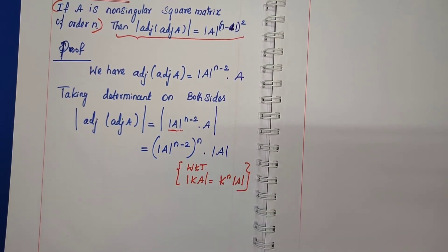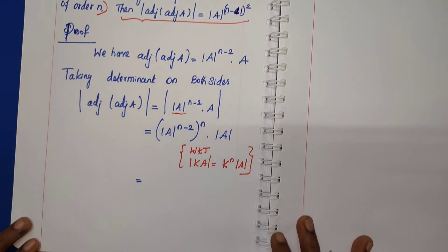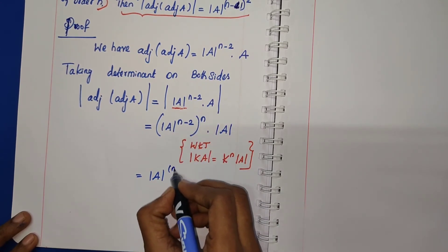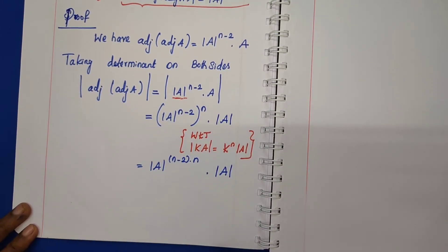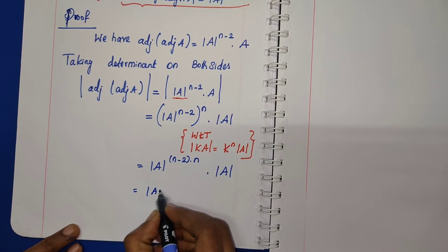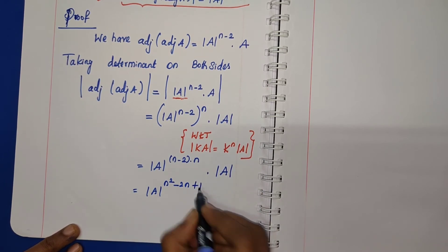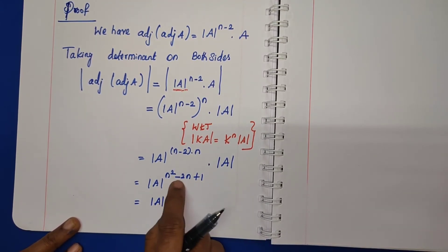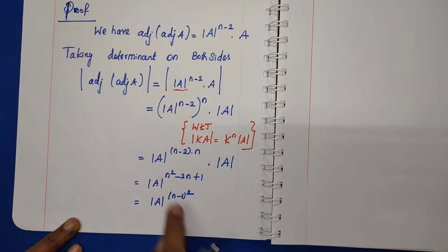So we can multiply the powers: determinant A to the power (n-2) into n, plus determinant A to the power 1. Combining, the power becomes n squared minus 2n plus 1.